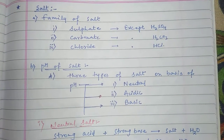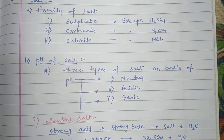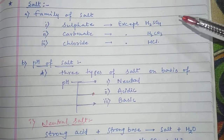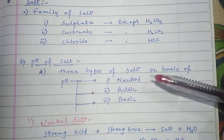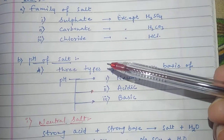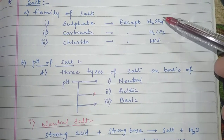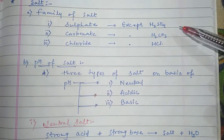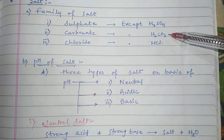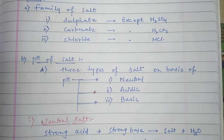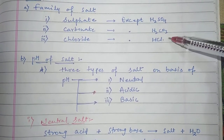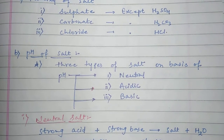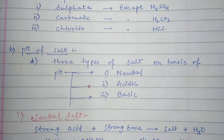Hello students, in this video we will discuss about salt. We have already discussed acid and base. The first topic is the families of salt. There are a number of families, but I have mentioned only three: sulfate, carbonate, and chloride. If you find sulfate with any kind of metal, that is a sulfate salt. If you find carbonate with any metal, that is a carbonate salt. Similarly, chloride with any metal is a chloride salt — like NaCl for chloride, sodium carbonate for carbonate, and ammonium sulfate for sulfate.